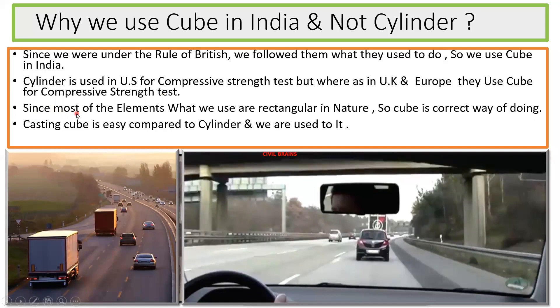The next point is that most of the elements we use in RCC — rectangular columns, rectangular beams, slabs — are rectangular or square in nature. The cube is also square in nature, so the shape is almost close to that. Some people say that since the real structure is similar in shape to the cube, we try to go with the cube.